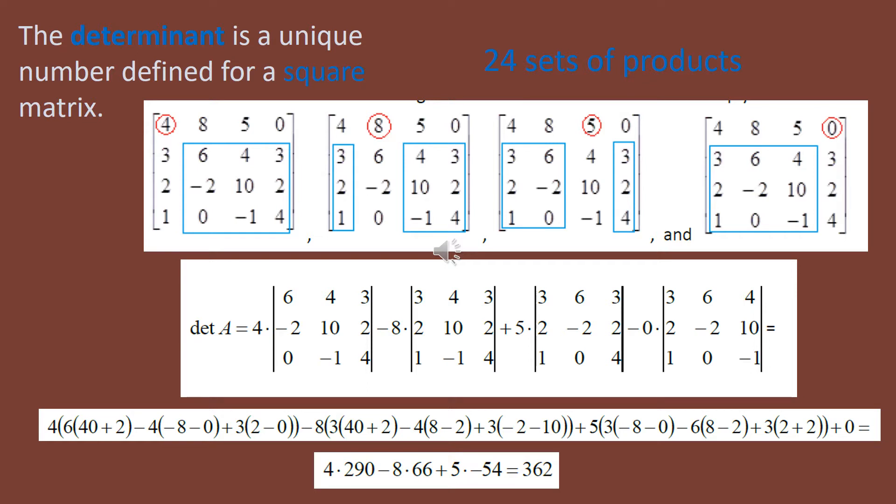With a 4x4, you could start in the upper left-hand first row, first column. With that number 4, you're connecting it to the lower right-hand matrix — a 3x3 matrix within the 4x4 — because all of those values are in different rows and different columns. Moving to the 8, leave out the row and column that contains the 8. Moving to the 5, eliminate the row and column that the 5 is in. And with 0 being the last number in the first row, pair it up with the values in the lower left 3x3.